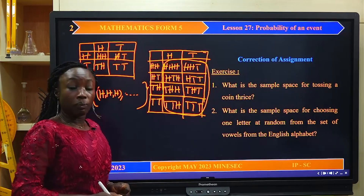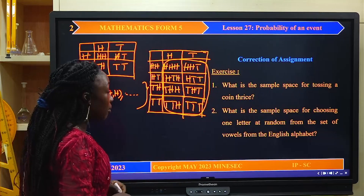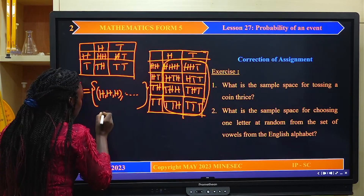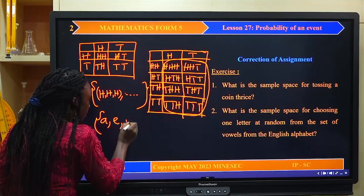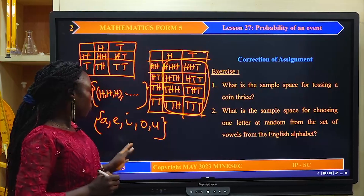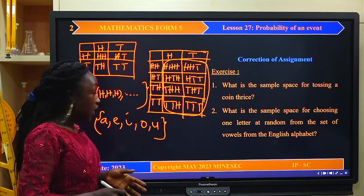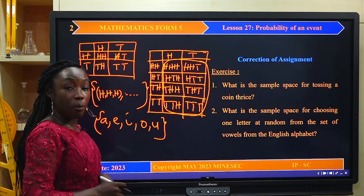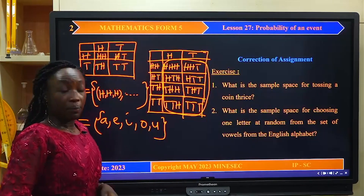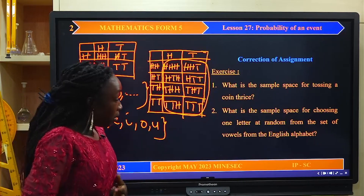For the second question: what is the sample space for choosing one letter at random from the set of vowels? We know that the set of vowels from the English alphabet is {A, E, I, O, U}. Note that the French alphabet is different. To choose a letter from this set, the sample space is simply this set: A, E, I, O, U.